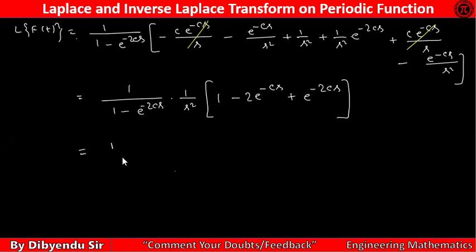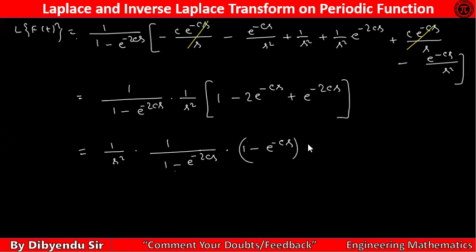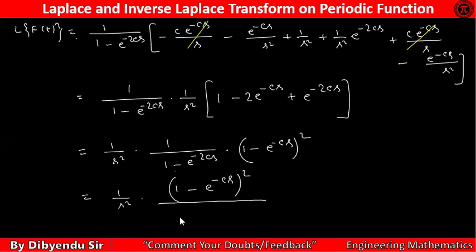That gives plus e to the power minus 2cs. So this equals one by s² into one minus e to the power minus cs, whole squared. This is a² minus b² form, so: one plus e to the power minus cs, into one minus e to the power minus cs.